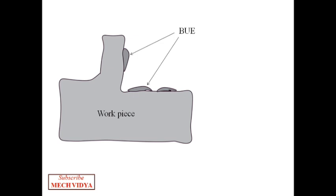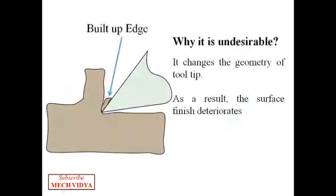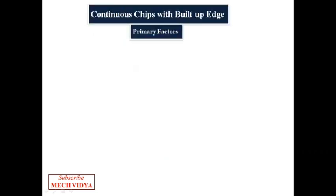It also alters the geometry of the tool tip by adding extra metal there, and this is why the built-up edge is not at all desirable. Now let us try to understand the main factors which give rise to continuous chips with built-up edge. Usually ductile materials under poor conditions give rise to built-up edge. So what are these conditions?